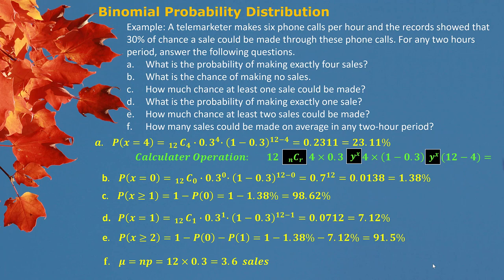Part F is easy. We are looking for how many sales on average in any two-hour period. Using the formula, n multiplied by p gives us the mean: 12 multiplied by 0.3 gives us 3.6 sales on average for each two-hour period.